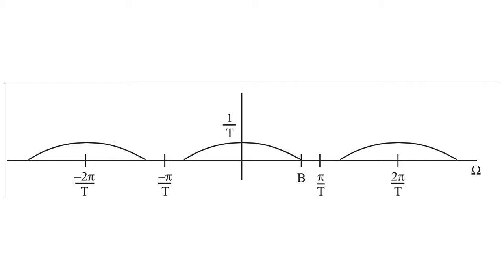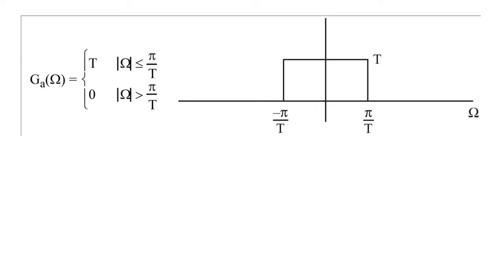We can accomplish both of these tasks with a low-pass filter with the band limit of pi over T that eliminates the replicates created by sampling. The low-pass filter would also need to have height T to counteract the vertical scaling caused by sampling. Therefore, our g sub a of omega would look like this.